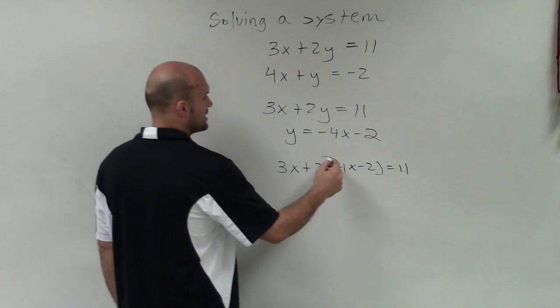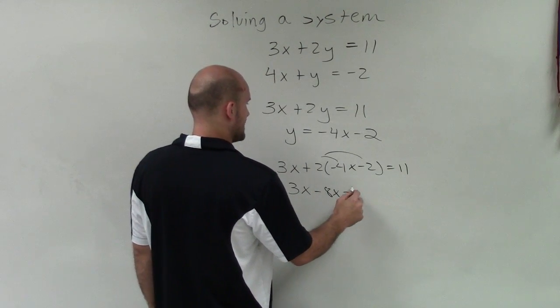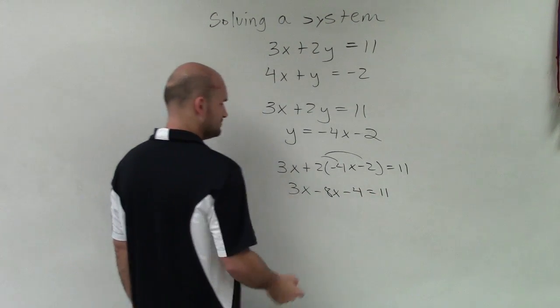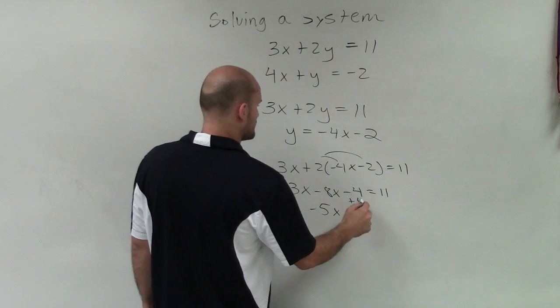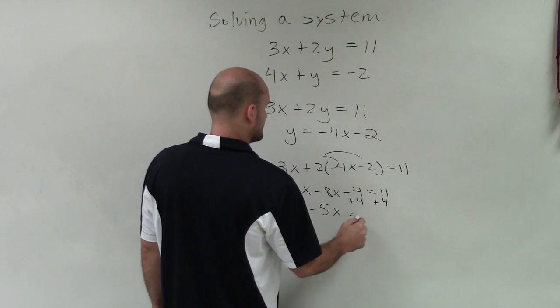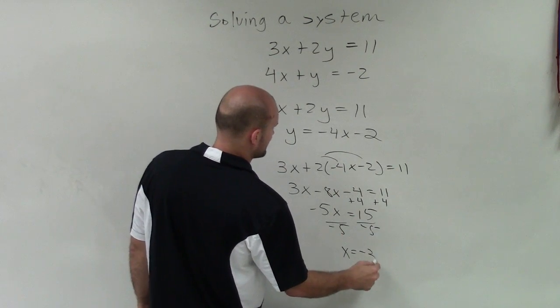Now I can apply distributive property. So I get 3x minus 8x minus 4 equals 11. Combine my like terms. So I get negative 5x. Add the 4 to the other side, equals 15. Divide by negative 5, x equals negative 3.